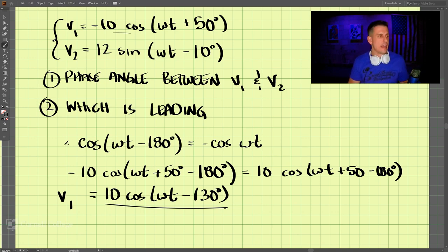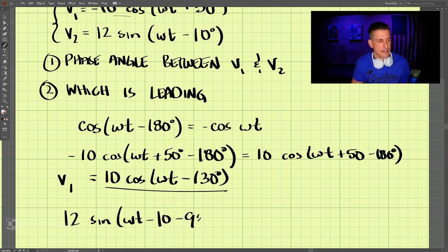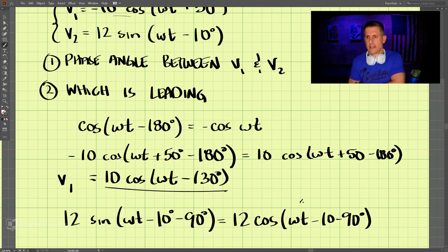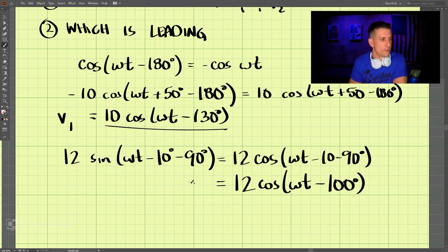Now for v₂, we need to transform the sine to cosine. Using the identity sin(ωt) = cos(ωt − 90°): v₂ = 12·sin(ωt − 10°) becomes 12·cos(ωt − 10° − 90°) = 12·cos(ωt − 100°). So v₂ = 12·cos(ωt − 100°).